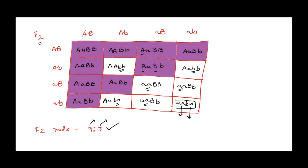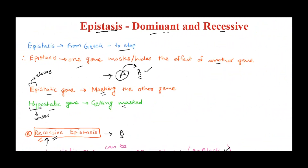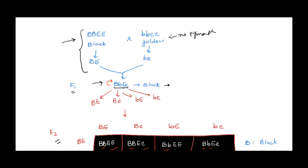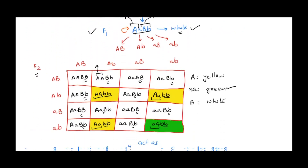In dominant epistasis, the epistatic gene should be in homozygous or heterozygous dominant condition to not allow the hypostatic gene to express, no matter its genotype. In recessive epistasis, the epistatic gene must be in homozygous recessive condition to block hypostatic gene expression. That's all about epistasis. I hope this video was helpful — do subscribe to the channel for a new video every week and I'll see you next time. Keep learning!